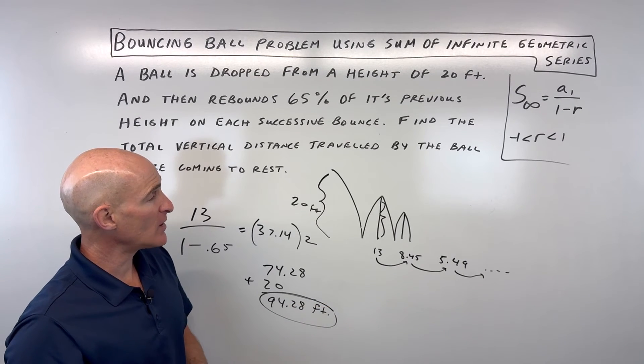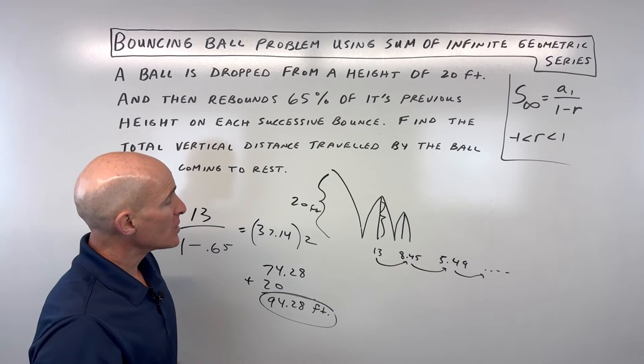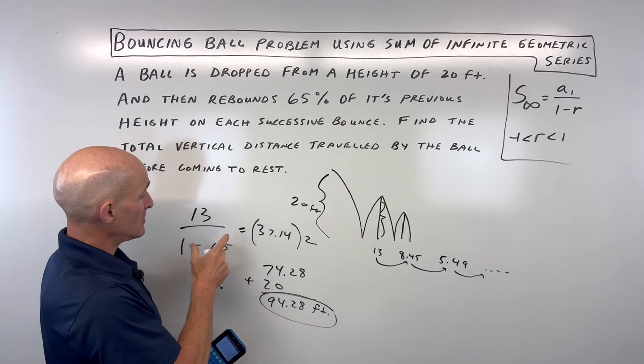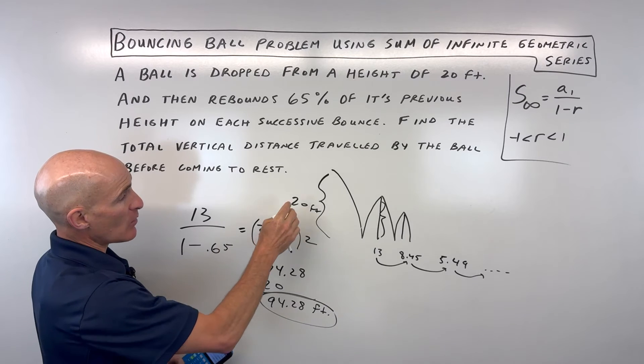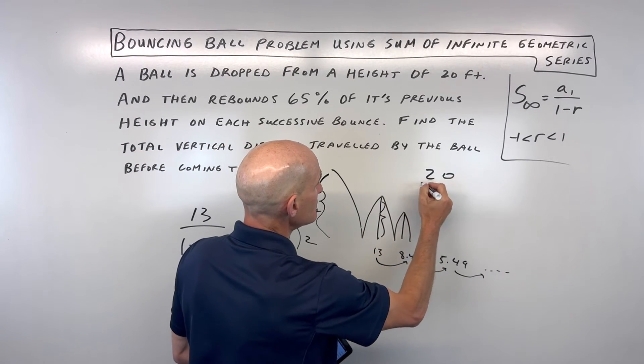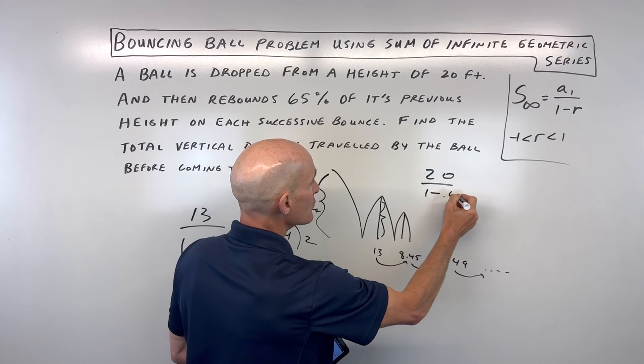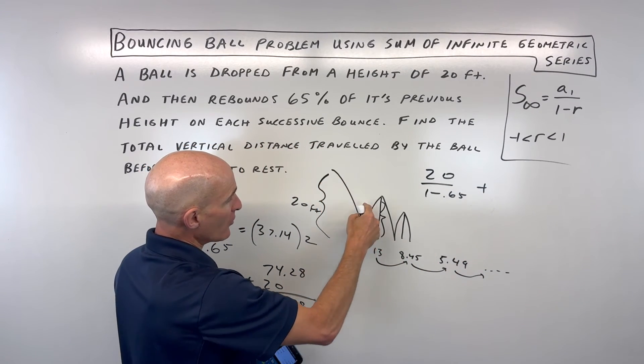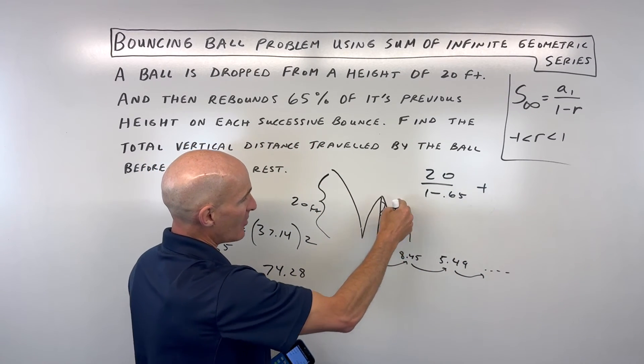Now, is there another way to do this problem? Well, one way to do it is you could treat this as two different series. You could say, I'm going to start with 20 over 1 minus the ratio of 0.65, so that's the one doing all the down drops, the down, down, down, like that.